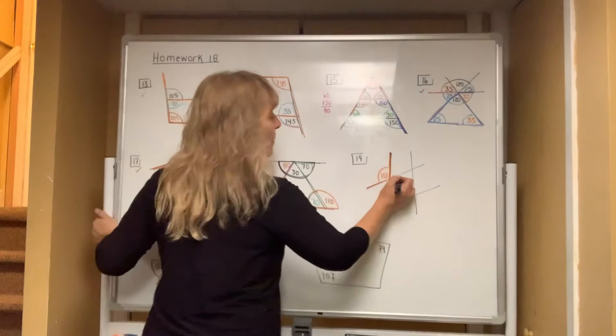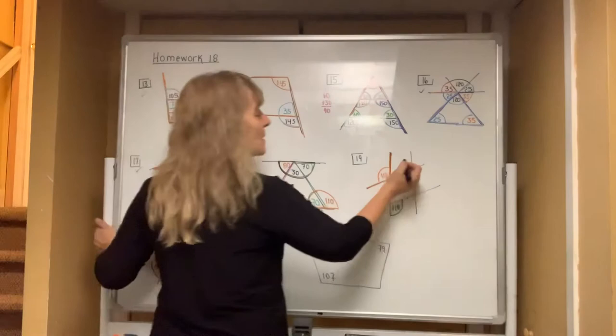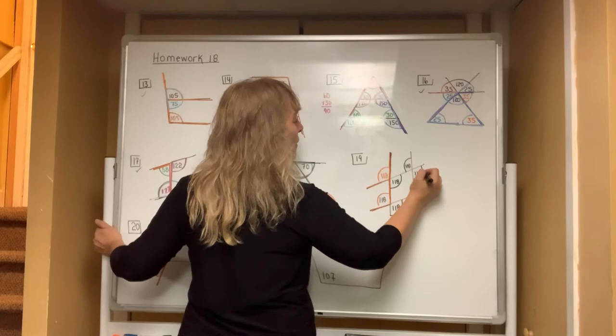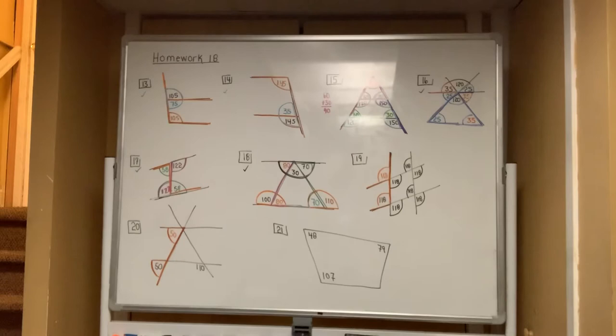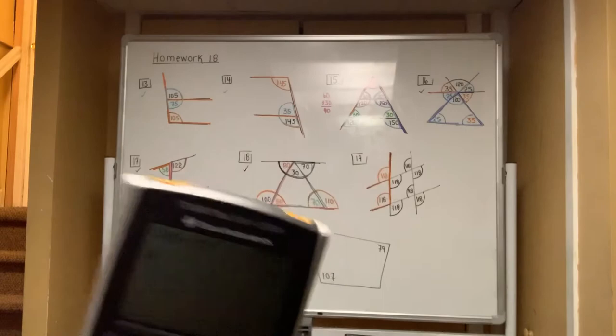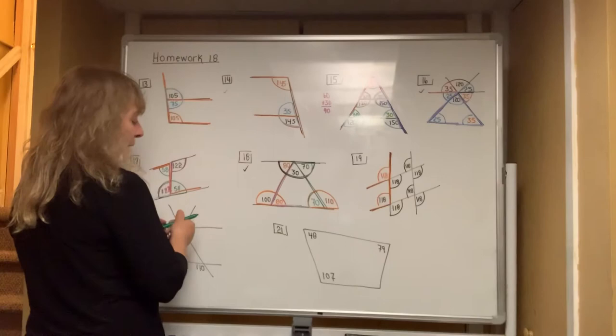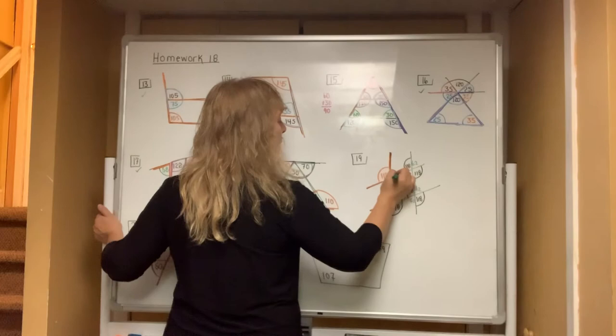In number 19, go for bow ties. There are bow ties throughout the diagram — remember, the basketball never spins. All those bow tie angles are 118. On your calculator, type in 180 minus 118 to get 62. That 62 appears at multiple positions in the diagram — here and here, here and here, here and here — like a green bow tie. All angles in number 19 are done.